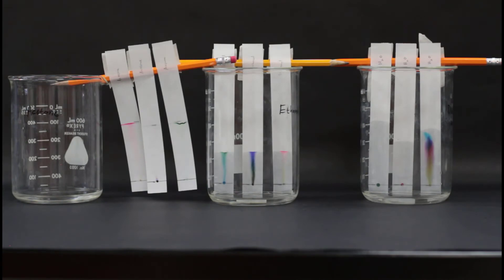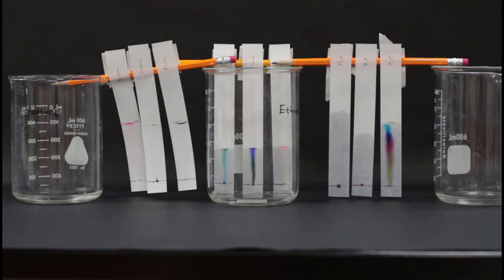If the solvent reaches halfway up the chromatography paper before the 15 minutes is up, go ahead and pull it out, and then mark the highest line that the solvent reached with a pencil, and then let them dry.